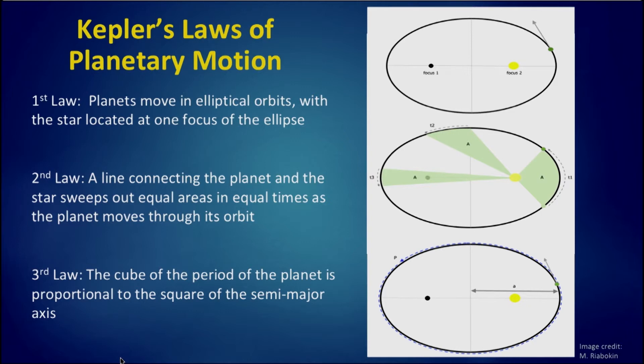The first law of planetary motion from Kepler is that planets move in elliptical orbits, with a star located at one focus of the ellipse. As we've seen, exoplanets on average tend to have larger ellipticities, or more elliptical or squashed orbits, than the planets in the solar system, which are mostly quite close to circular.